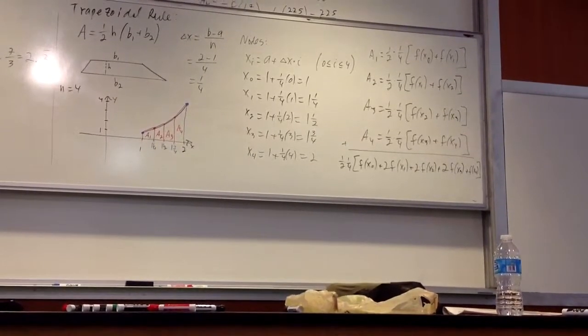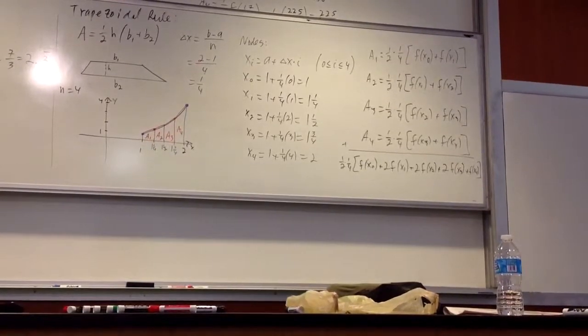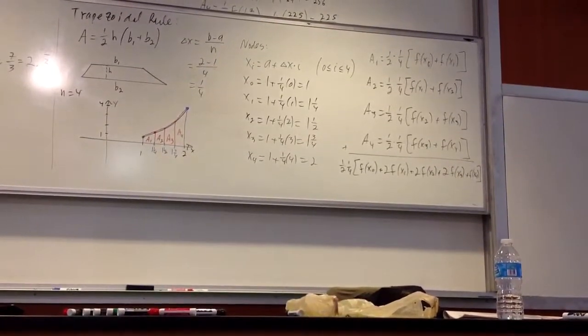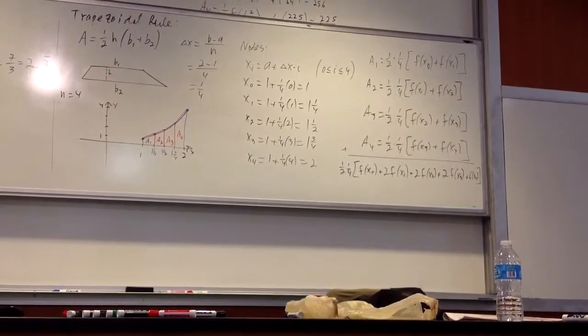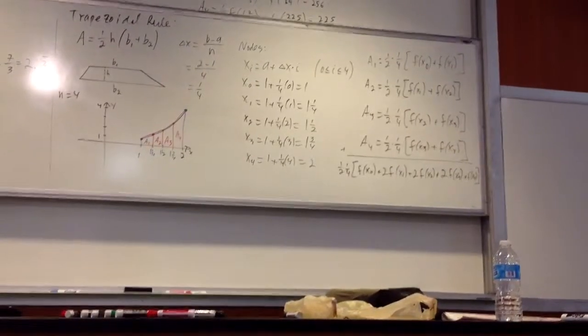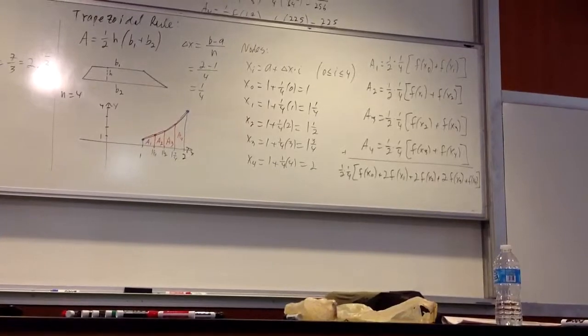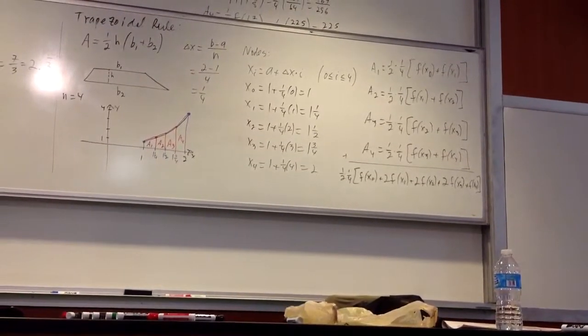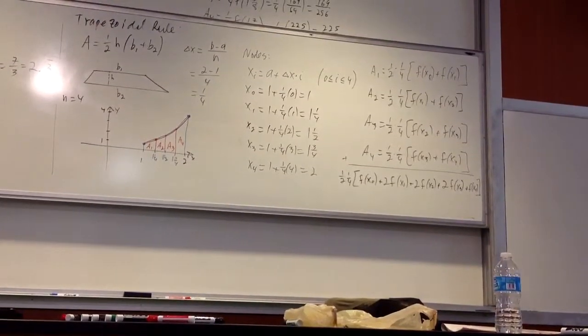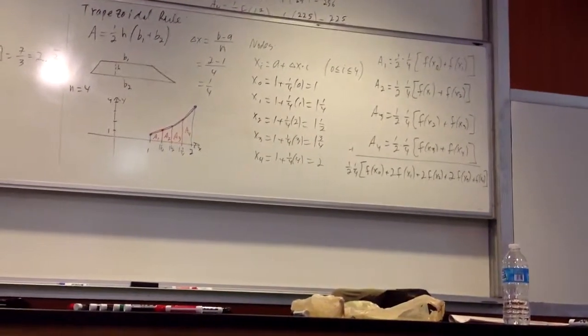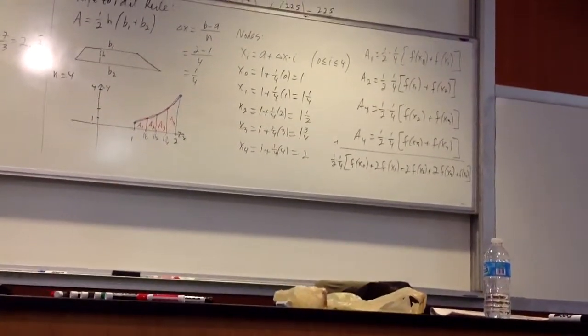Delta x then f of x naught plus 2 f of x1 until x of x n minus 1. That's 2. And then plus f of x by n. What's the generalized formula? If you can get the purple, I know what the generalized formula is. The n would be in your notes, yeah.